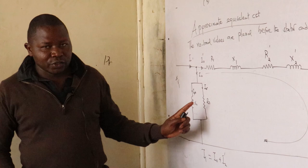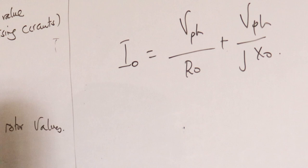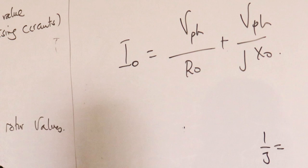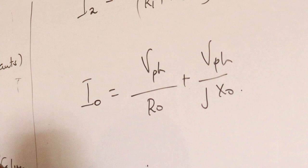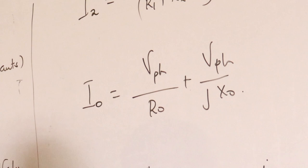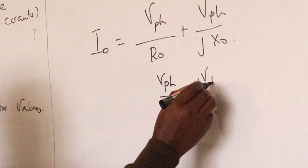Then I0 equals V per phase over R0, plus V per phase over J·X0. But what is 1 over J? Since J is the square root of negative 1, then 1 over J is negative J. So this can be written as V per phase over R0, minus J times V per phase over X0.